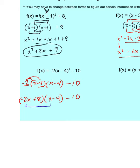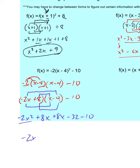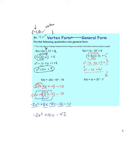Now FOIL: negative 2x times x gives negative 2x squared. Outside is negative 2x times negative 4, which is plus 8x. Inside is 8 times x, another plus 8x. Last is 8 times negative 4, which is minus 32, and we have minus 10 as well. Combining like terms: negative 2x squared leads, plus 8x and plus 8x gives plus 16x overall, and minus 32 and minus 10 gives minus 42. The values of changing between forms stem from what each form gives us — vertex, x-intercepts, y-intercepts — so be prepared to move between them.